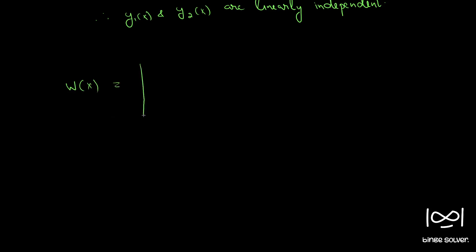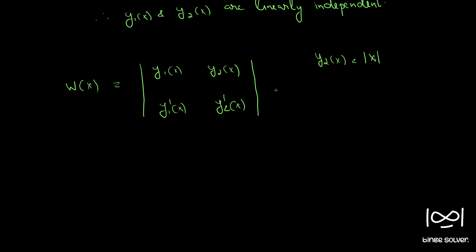Now, why the Wronskian cannot be computed — that is the second part. The Wronskian requires y1(x), y2(x), y1'(x), and y2'(x). Here y2(x) = |x|, and we need the derivative of |x|. The derivative d/dx of |x| does not exist at x = 0.